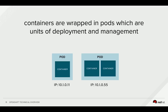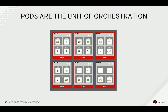A pod models an application-specific logical host. In a pre-containerized world, these would have been services running on the same physical or virtual machine. In OpenShift, the smallest unit that can be orchestrated is the pod. OpenShift determines where and how to run the pods across a pool of resources, as well as how to manage the complexity of networking pods together and managing the lifecycle of pods.